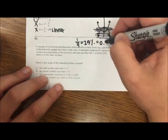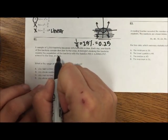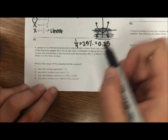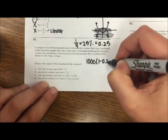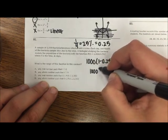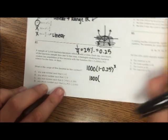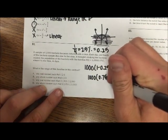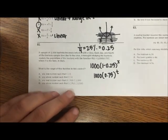A biologist studying the bacteria models the population with this function, which makes sense because you start with this, you decay, so 1 minus, so 1 minus 0.25 gives me 0.75. So that's where this came from, and they use t instead of x. Which is the range? So, again, range is y values.